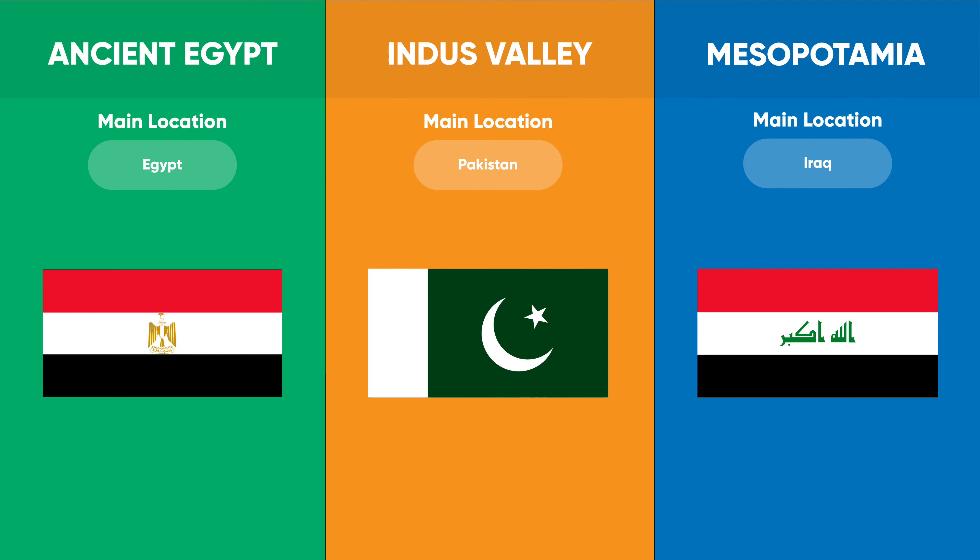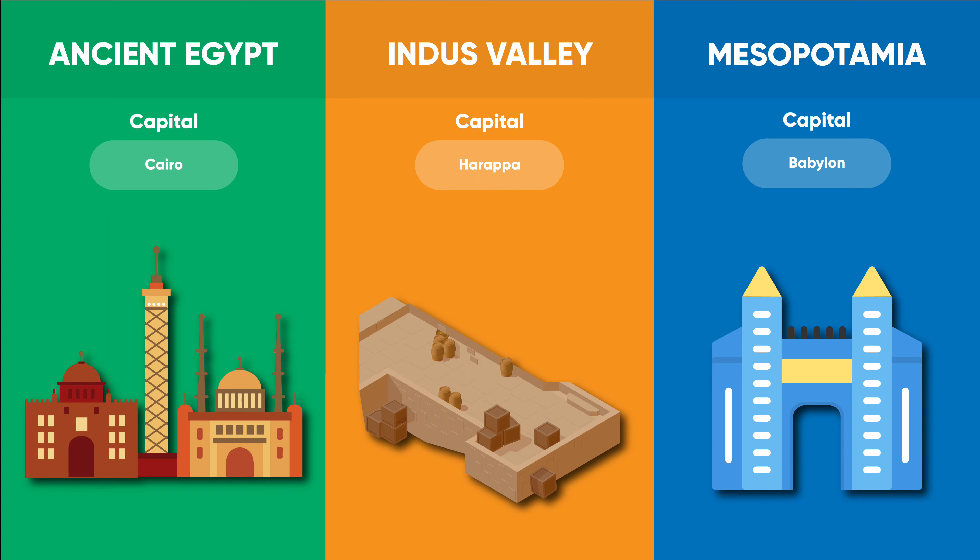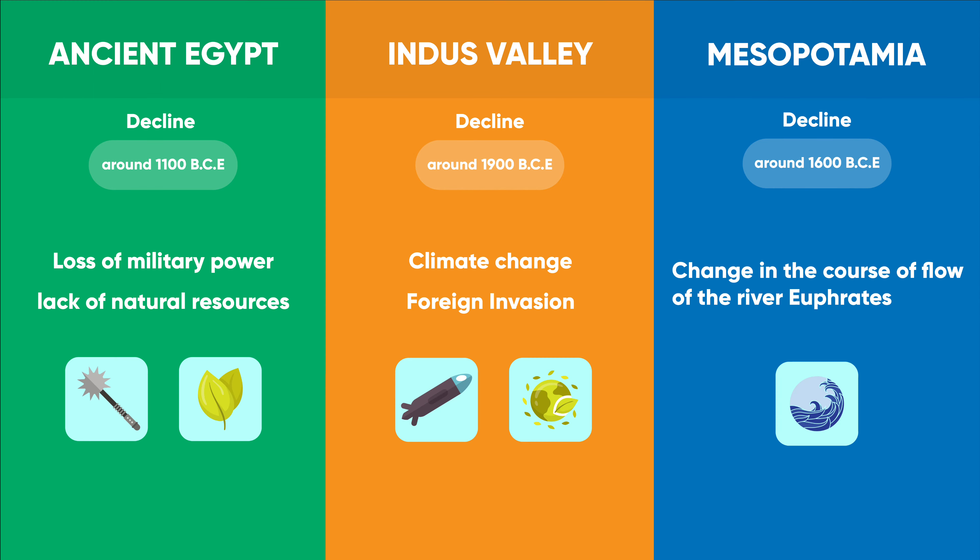The region of Mesopotamia is now home to modern-day Iraq, Kuwait, Turkey, and Syria. The capital city for ancient Egypt was Cairo. For Indus Valley it was Harappa, and for Mesopotamia it was Babylon, thriving around 1100 BCE.